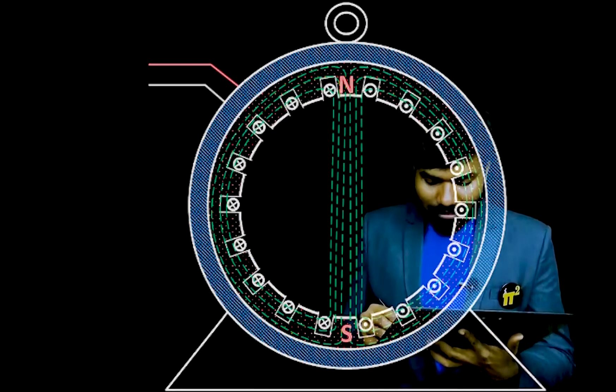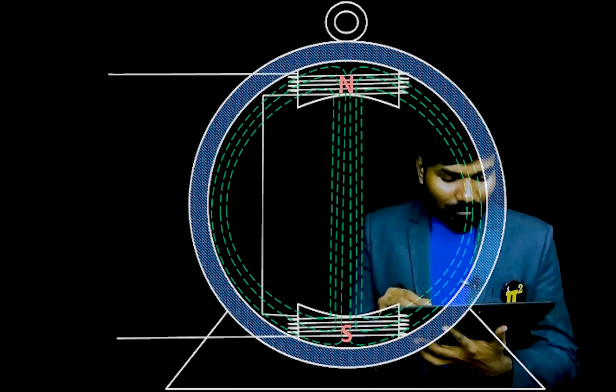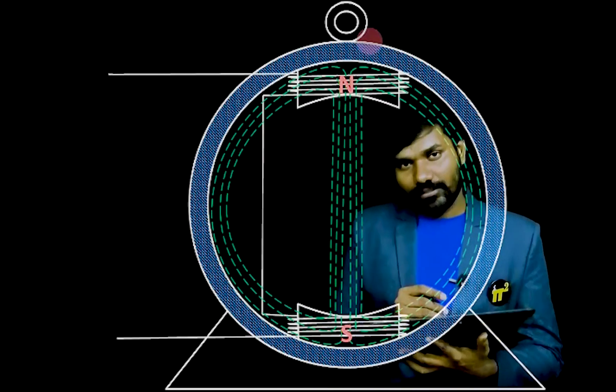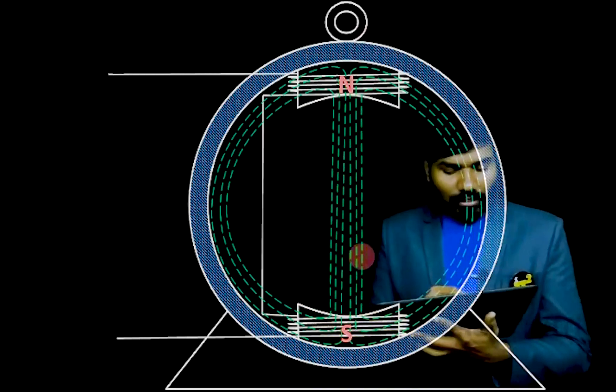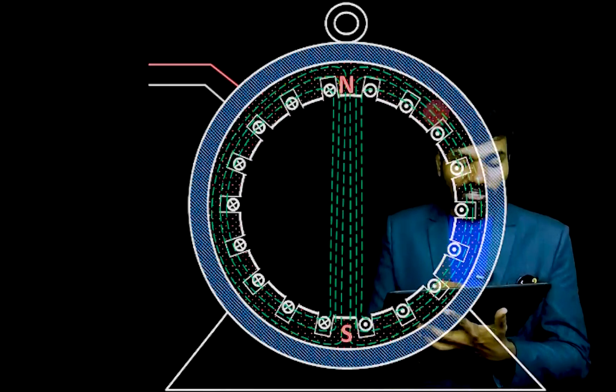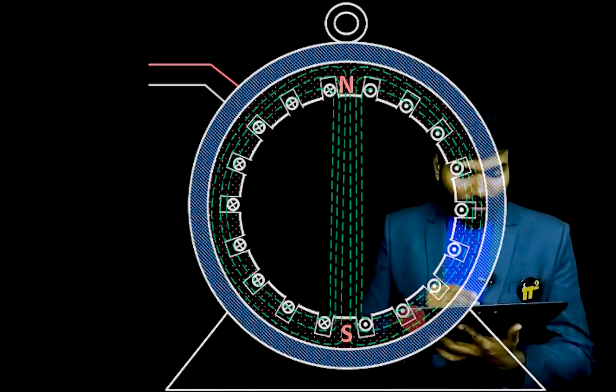Some textbooks give the stator construction differently. Instead of distributed winding, they will use concentrated winding — just for easy understanding, they use a salient pole type stator representation. But actually speaking, the winding is a distributed winding; the salient pole representation is used only for easy understanding.